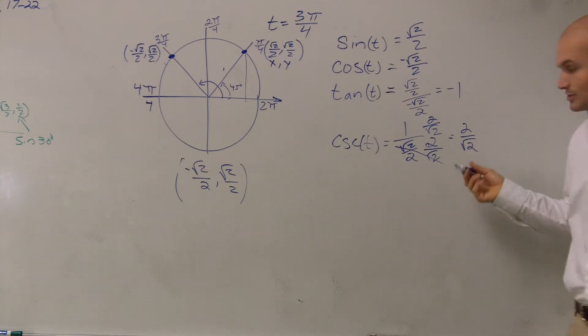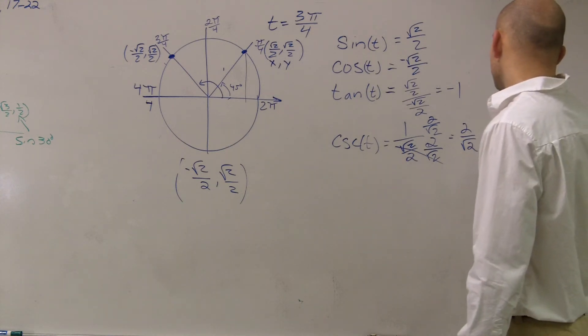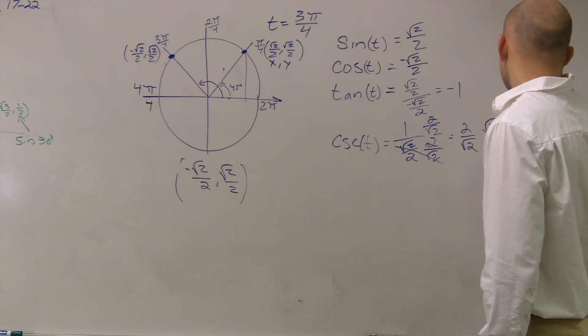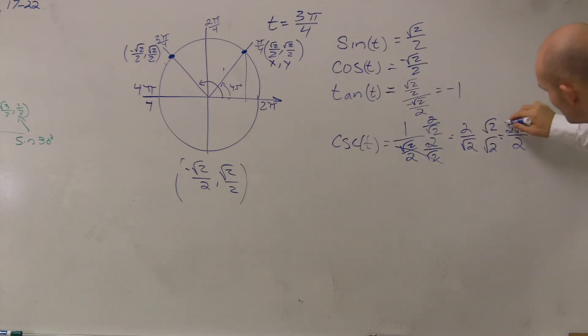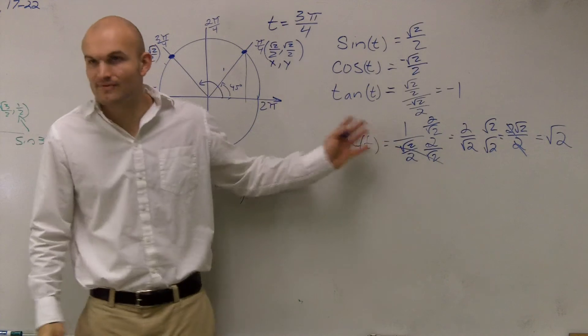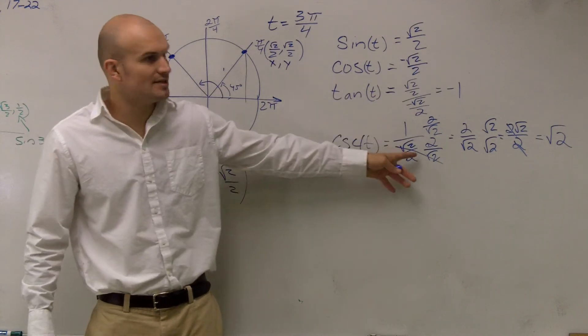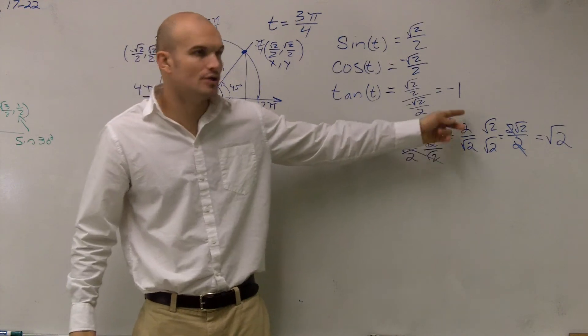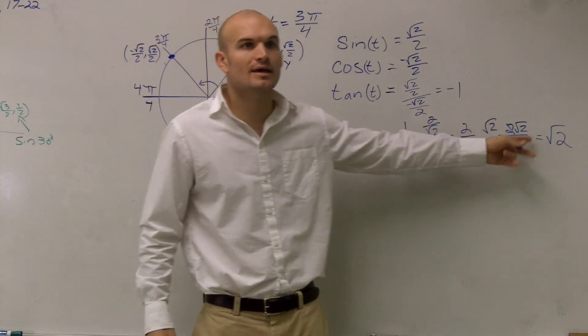Now we cannot have a radical on the bottom. So now you have to rationalize the denominator. And now my 2s cancel out. So isn't that fun? Look at all that math you guys get to do. Okay? You guys follow my steps? First thing, just multiply by the reciprocal. And I get 2√2. Rationalize your denominator and then simplify.